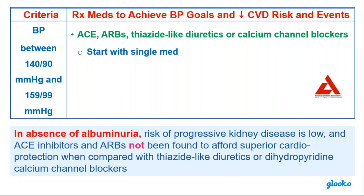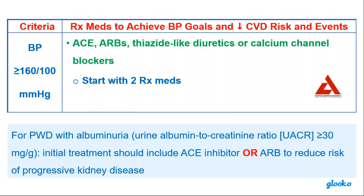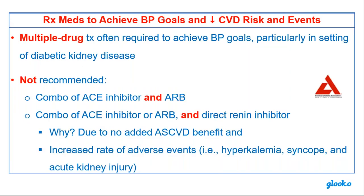For a patient between 140/90 and 159/99, start with a single med — an ACE or an ARB. At greater than 160 over 100, ADA says to pick two of these medications — never an ACE and an ARB together. ACEs and ARBs are kidney protective, and multiple drug therapy is often required to achieve blood pressure goals, especially with people with kidney disease.